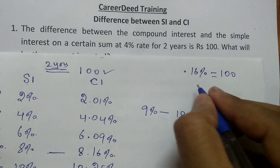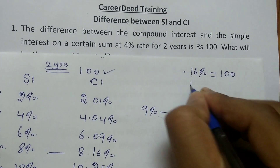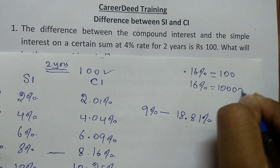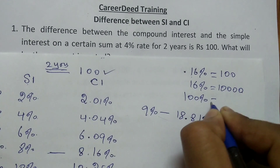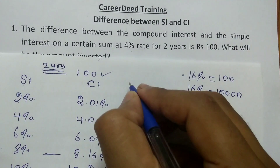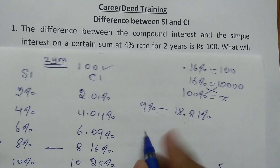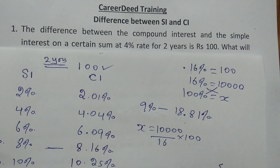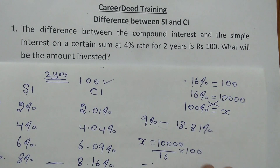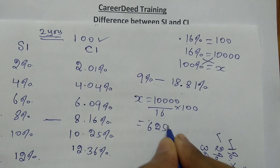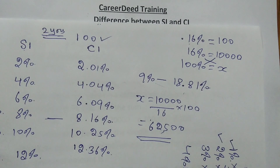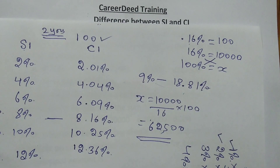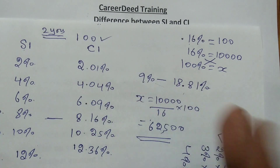So 0.16% equals Rs. 100. Using the unitary method: if 0.16% = Rs. 100, then 16% = Rs. 10,000. The principal is 100%, so using cross multiplication: x = (10,000 / 16) × 100 = 62,500. So the answer is Rs. 62,500. In each bank you invested Rs. 62,500 at 4% for 2 years, and the difference is Rs. 100.